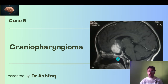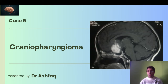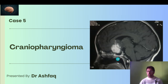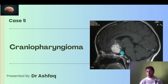Over here you can see a lesion — this is a craniopharyngioma. Craniopharyngiomas are usually benign, often cystic, and are sellar tumors located in the region of the sella turcica. Embryologically, they originate from Rathke's pouch. They are usually large, sometimes giant, and multilobular. This is the presentation of craniopharyngioma — a very important brain tumor.